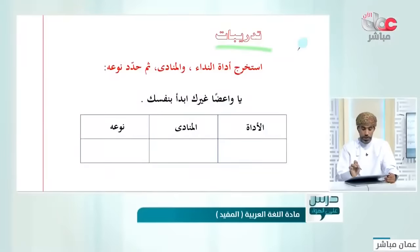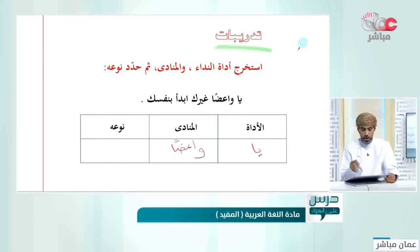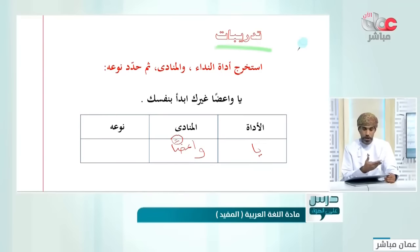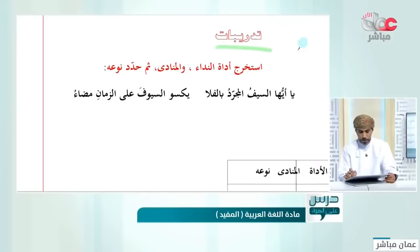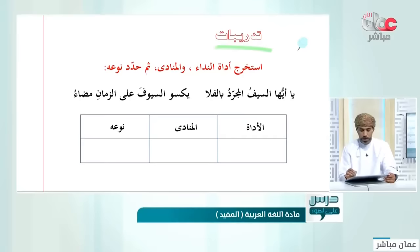تدريبات: يا واعظاً غيرك ابدأ بنفسك. الأداة 'يا' والمنادى 'واعظاً'. نوعه: بما أنه معرب فيحتمل أن يكون مضافاً أو شبيهاً بالمضاف أو نكرة غير مقصودة. هنا 'واعظاً غيرك' شبيه بالمضاف لأنه عمل فيما بعده.